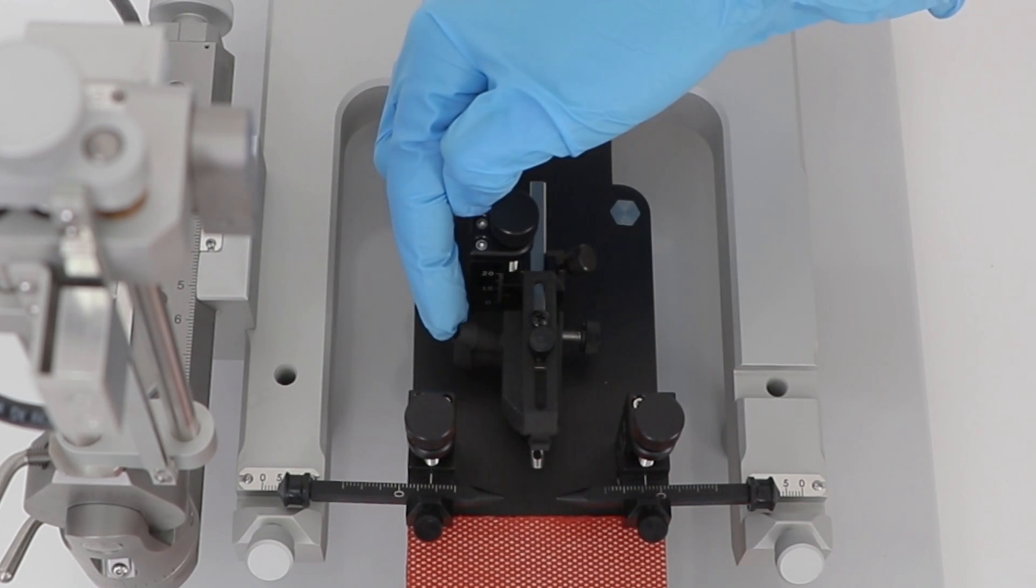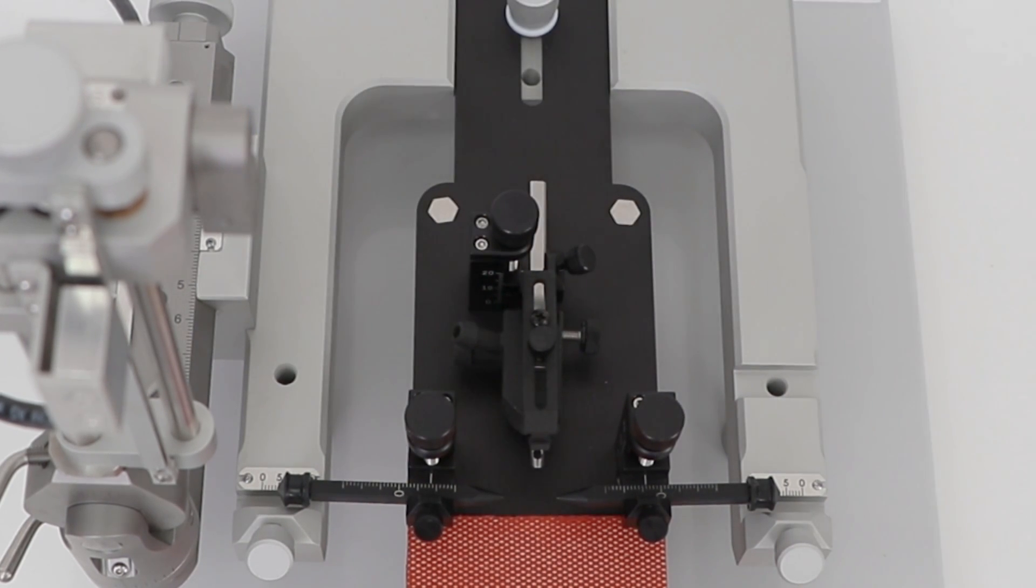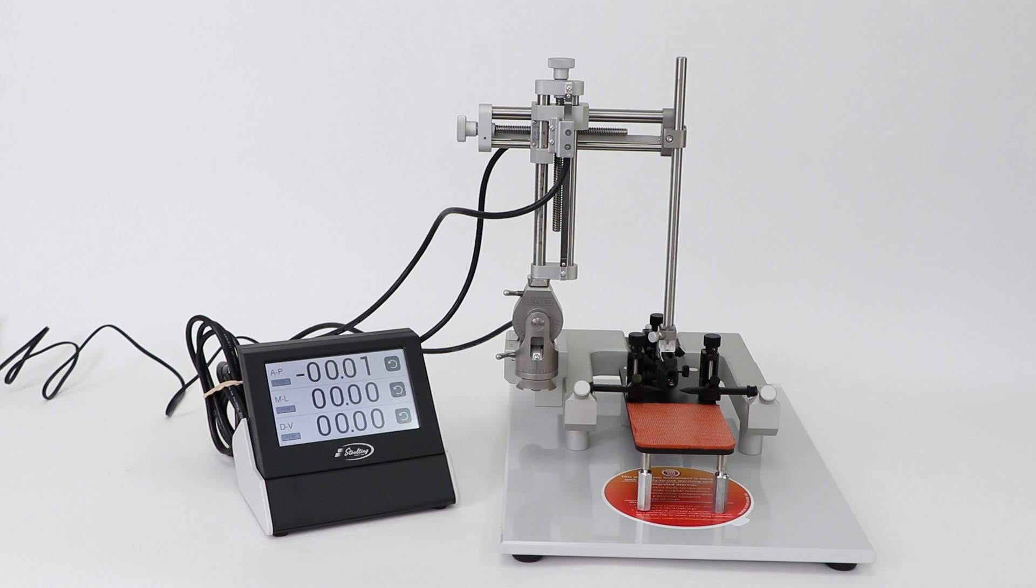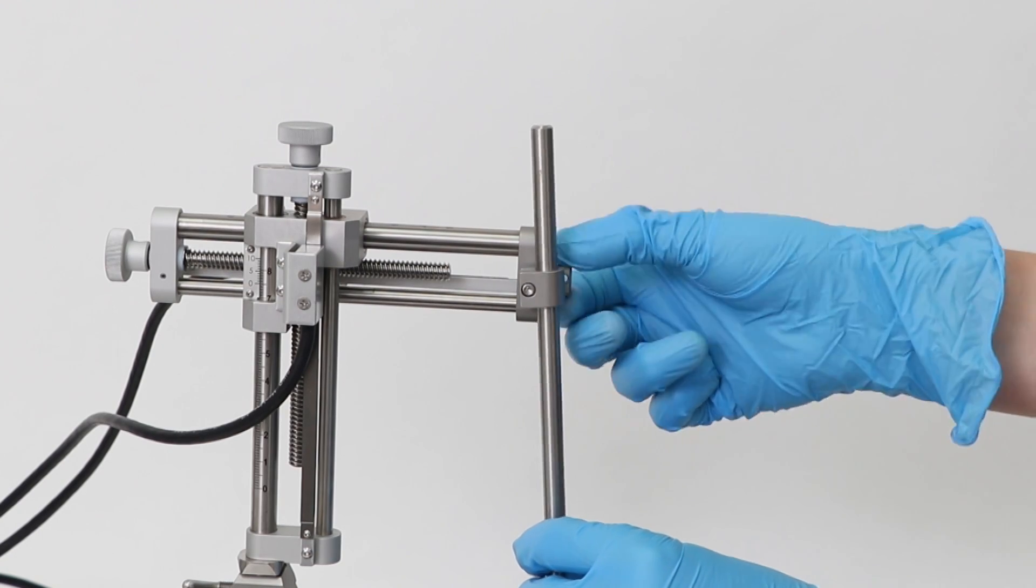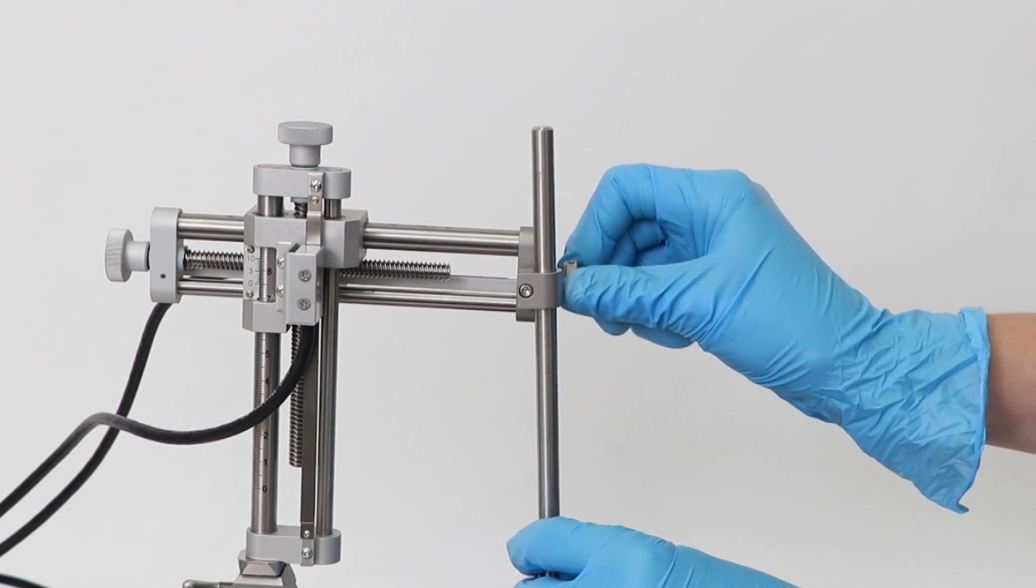Connect your anesthesia line to the back of the mask block. The manipulators should come with the probe holder already attached. If you need to remove it, loosen the screws here and set it aside.